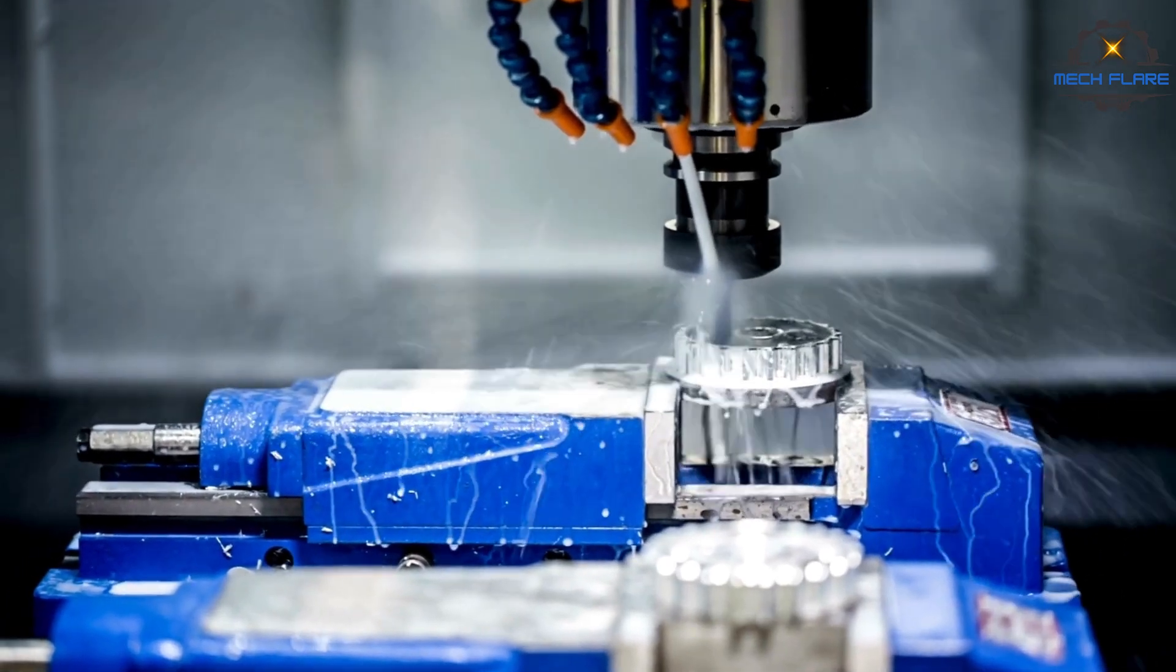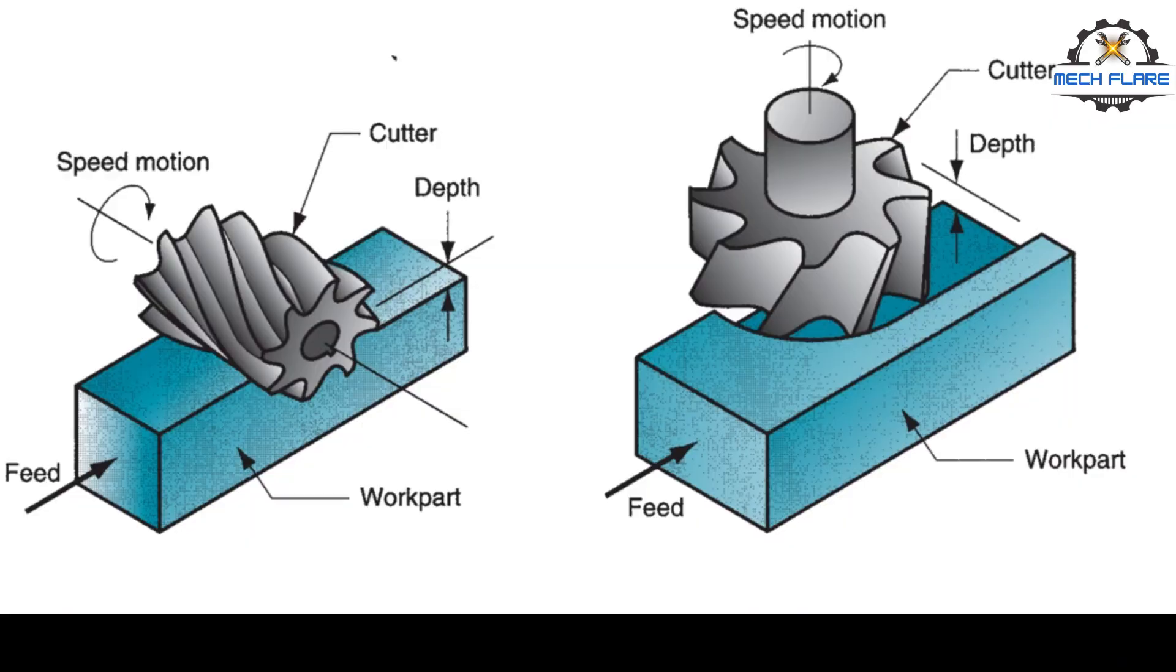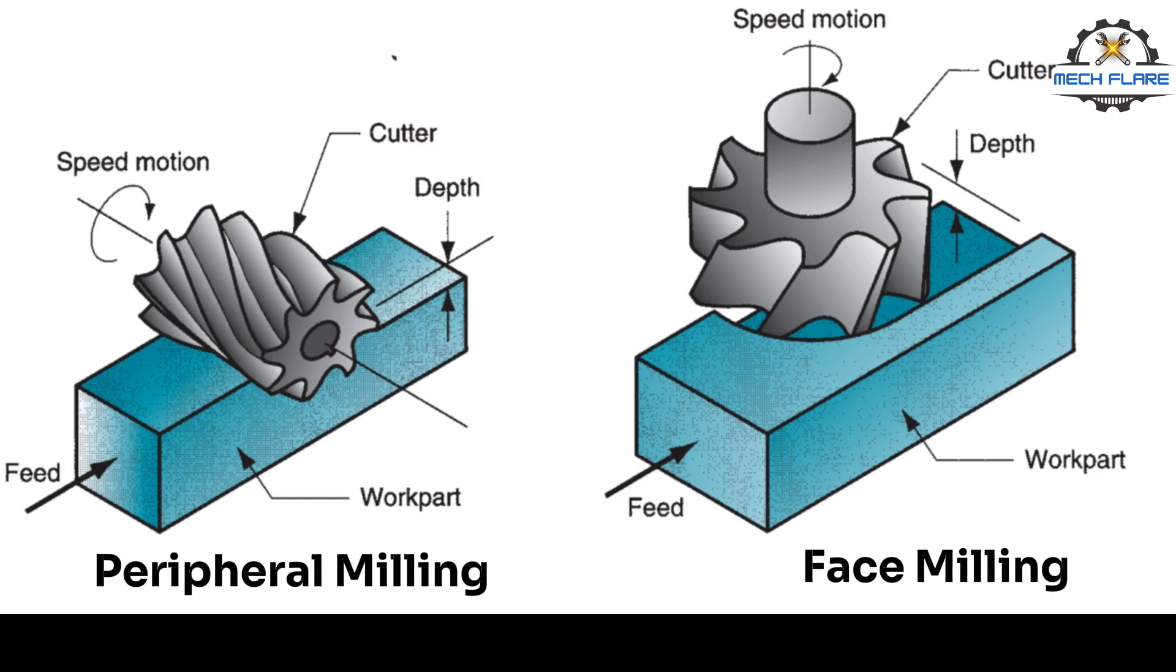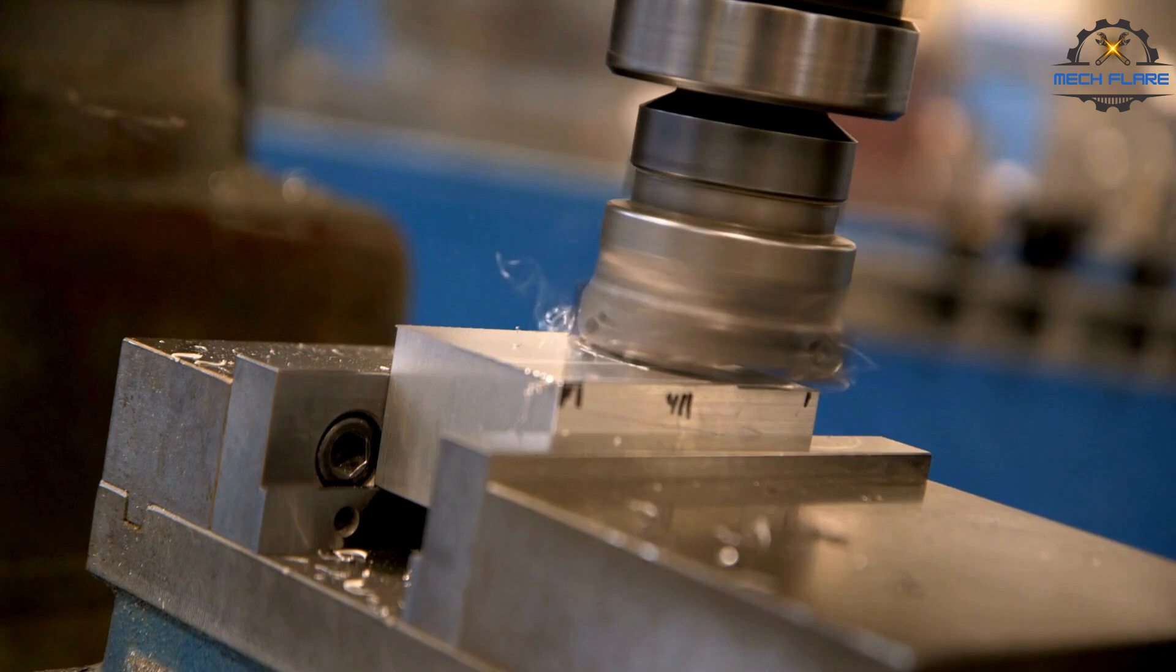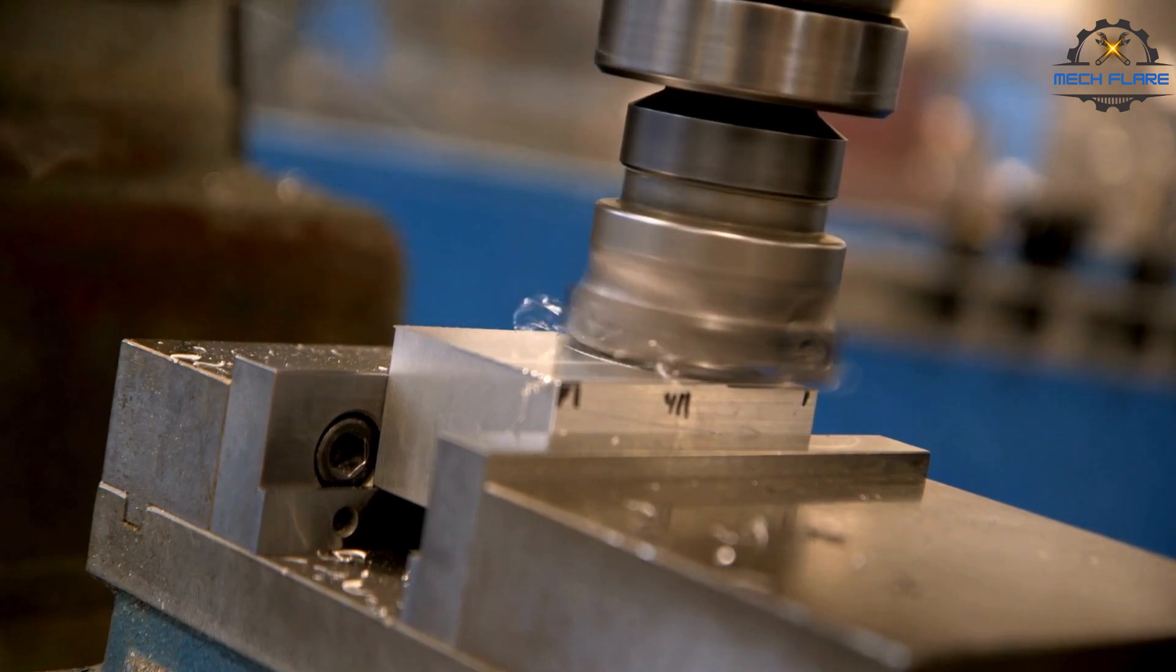In the previous video, we discussed milling and its two basic types, which are peripheral milling and face milling. You can watch that video from here. In this video, we discussed types of milling as promised in the previous video.